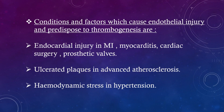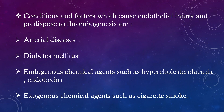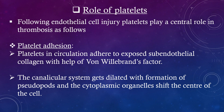Conditions and factors which cause endothelial injury and predispose to thrombogenesis are: endocardial injury in MI, myocarditis, cardiac surgery, prosthetic valves, ulcerated plaques in advanced atherosclerosis, hemodynamic stress in hypertension, arterial diseases, diabetes mellitus, endogenous chemical agents such as hypercholesterolemia and endotoxins, and exogenous chemical agents such as cigarette smoke.